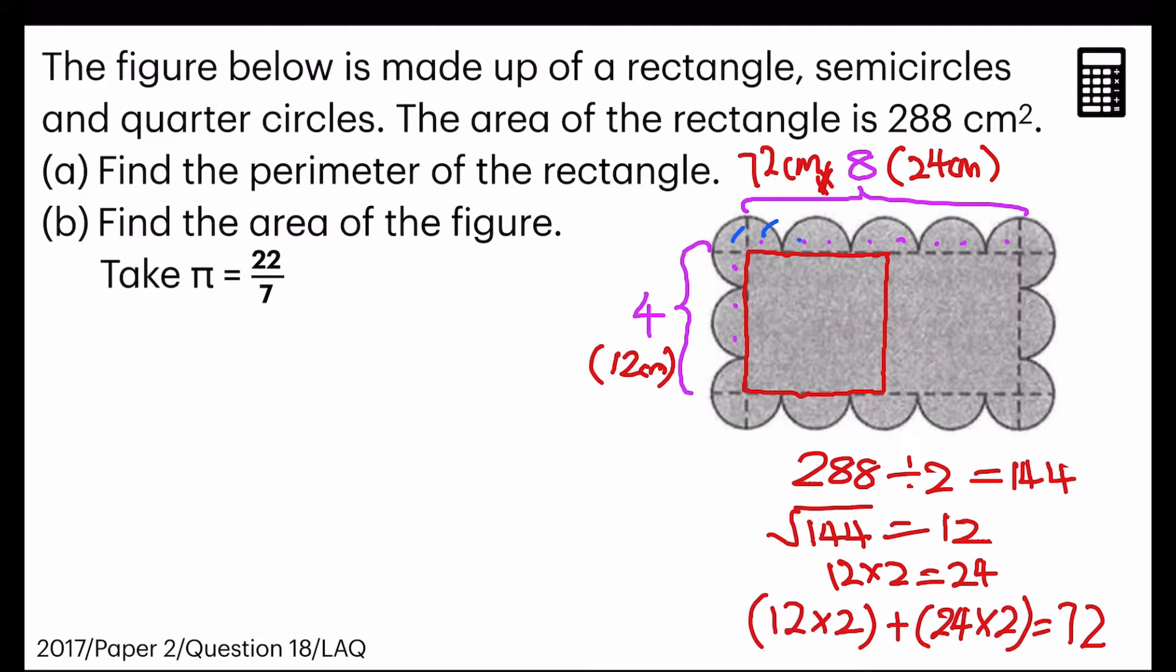Counting them: 1, 2, 3, 4, 5, 6, 7, 8, 9, 10... 27, 28. If we count them one by one, they are 28 quarter circles. Okay. And to find the area of the figure, I just have to find these 28 quarter circles and I add 288 to my answer. And that will be the final answer. So now let's find the area of the 28 quarter circles.